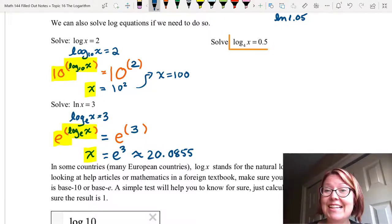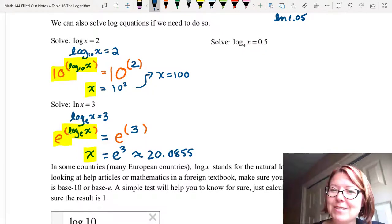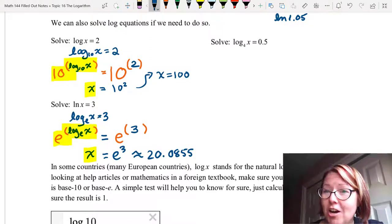All right, finally, let's solve log base 4 of x equals 0.5. Finally, one we don't have to rewrite first. We know what the base is, so we know what the inverse is. Log base 4 has an inverse 4 to the.